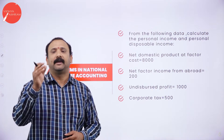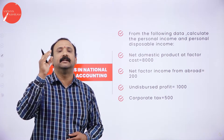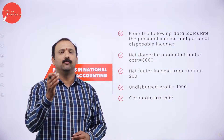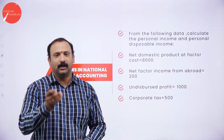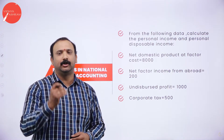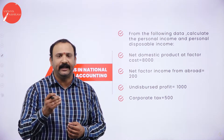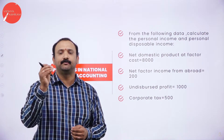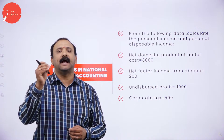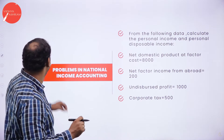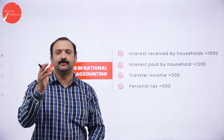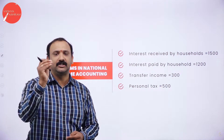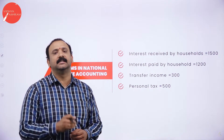From the following data, calculate the personal income and personal disposable income. We have been given certain facts: the net domestic product at factor cost is 8,000; net factor income from abroad is 200; undisbursed profit is 1,000; corporate tax is 500; interest received from the households is 1,500; interest paid by the household is 1,200; transfer income is 300; and personal tax is 500.